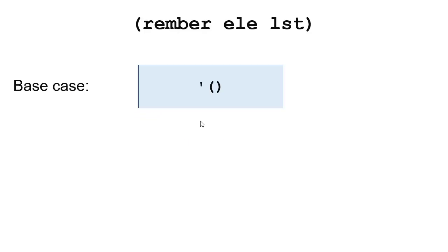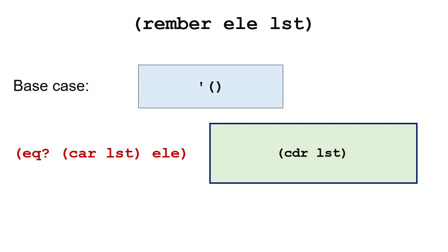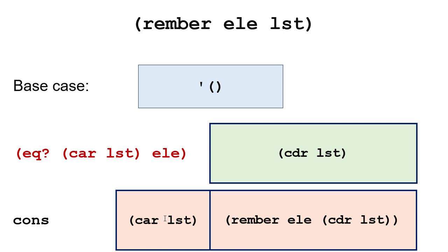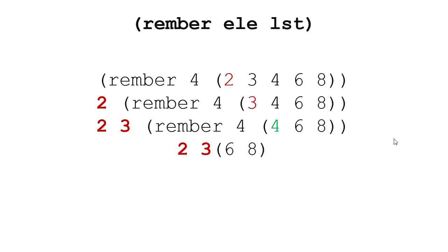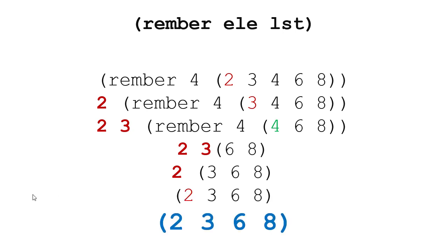The Little Schemer has a function called rember, and that removes the first instance of an element from a list. Our base case: if we remove something from an empty list, we get the empty list back. But we have two more cases. If the car of the list equals the element, we return a recursive call on the cdr — that is, the list with that first element removed. Otherwise, we cons the car back onto the list and remove that element from the cdr. For example, removing 4 from the list: 2 is not 4, 3 is not 4, but 4 equals 4, so we return the cdr. Then we cons 3 back and then 2, giving us the list 2, 3, 6, 8.